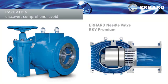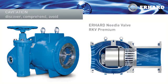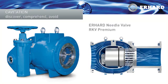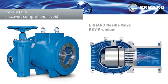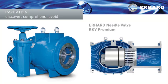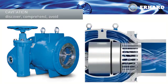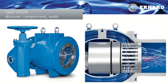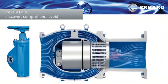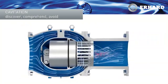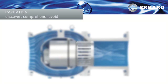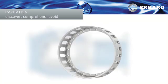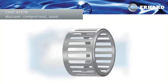Pure physics makes cavitation unavoidable even in these, but suitable measures reduce it or make it harmless. Special control inserts, for example, ensure that instead of at the body wall, the cavitation takes place in the centre of the pipe. It doesn't cause any harm there.